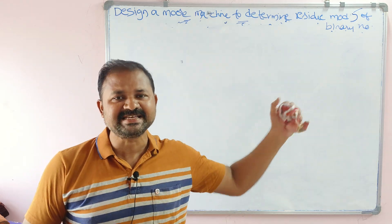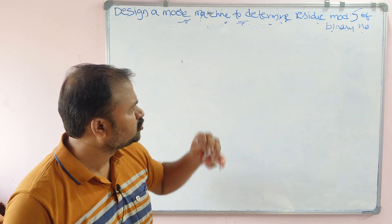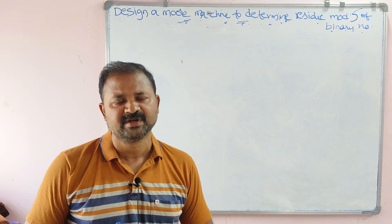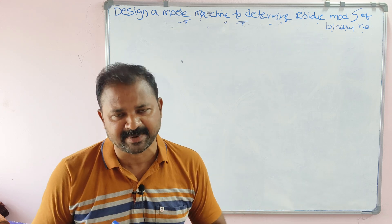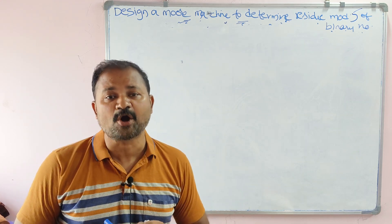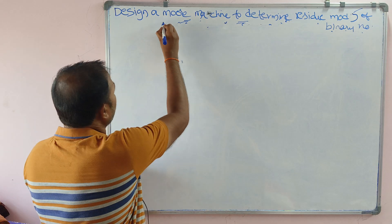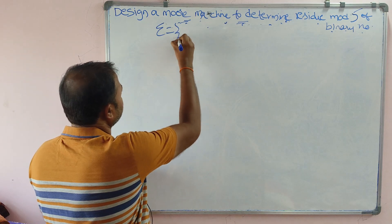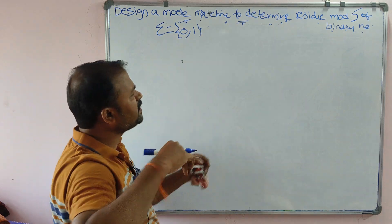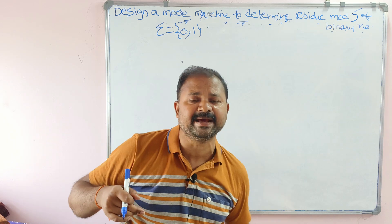Let us see this problem. Design a Moore machine to determine residue mod 5 of a given binary number. We know what a binary number is — it is a combination of zeros and ones. So input alphabet sigma equals {0, 1}. The problem is: residue mod 5 of a binary number.